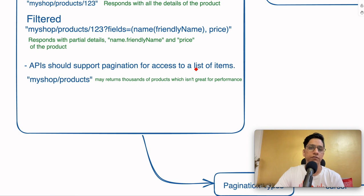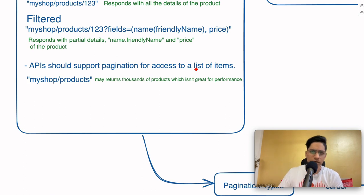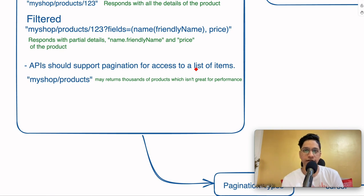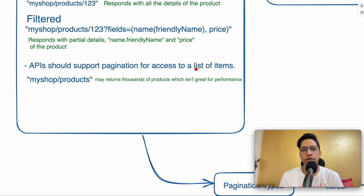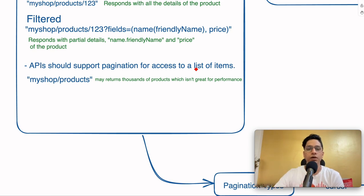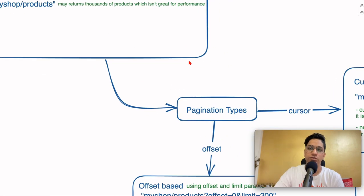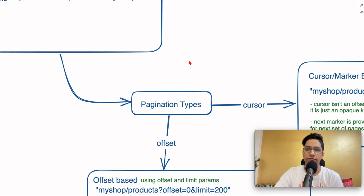APIs should also support pagination for access to a list of items. You might be accessing a list like all products, all orders for a customer, or all active devices. The size of that set can be really huge — say 10,000 products in a shop. If you just call /myshop/products and ask for all products, it gives you 10,000 at once, which creates load on your database, the client, and the server. So you want to give results in batches — say 100 or 200 at a time — and the client sets the limit depending on what data size they're working with.